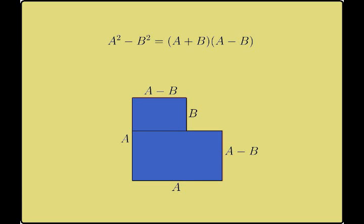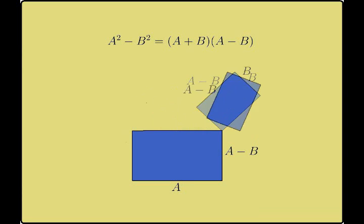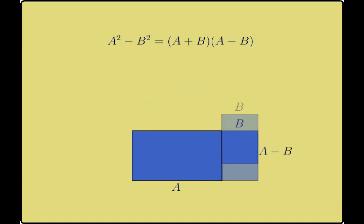Notice that both rectangles have one side of length A minus B. If we rearrange these rectangles and line up their sides of length A minus B, we form one large rectangle with dimensions A plus B by A minus B.